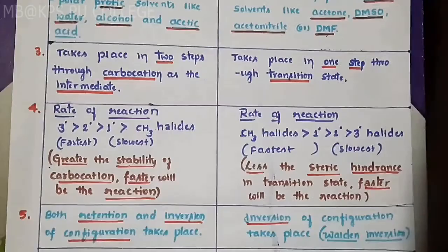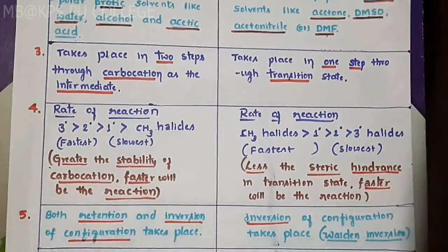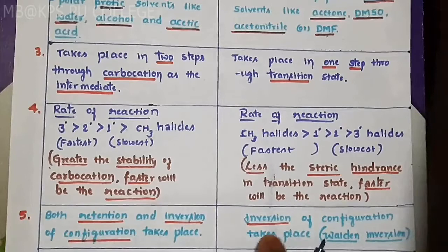Fifth point in SN1 mechanism: both retention and inversion of configuration take place. But in SN2, only inversion of configuration takes place.